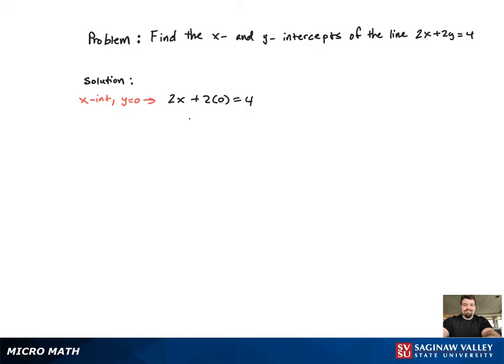We get 2x is equal to 4. x is equal to 2. And that corresponds to the point (2, 0).